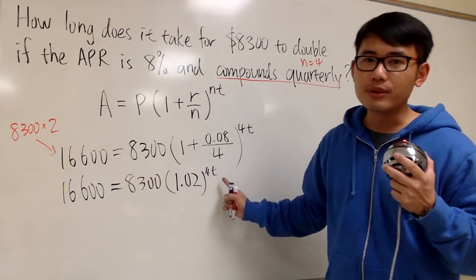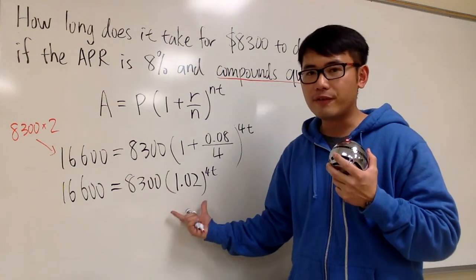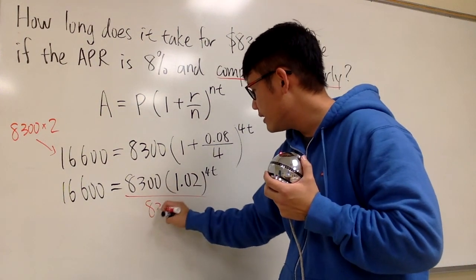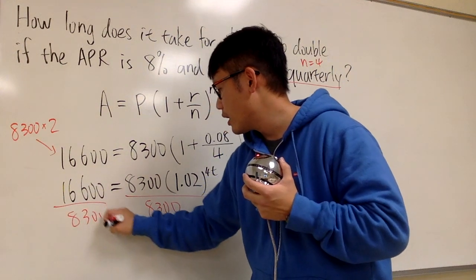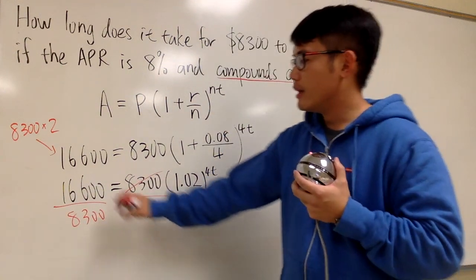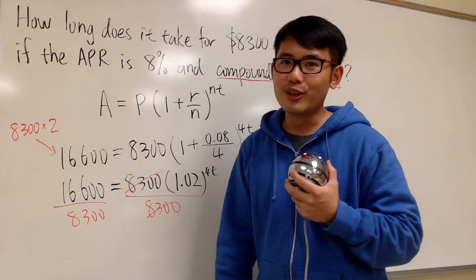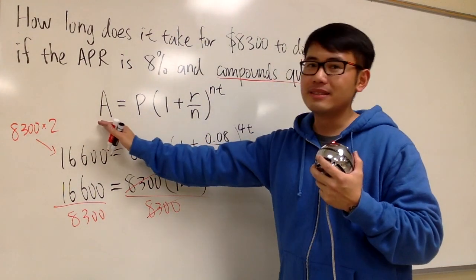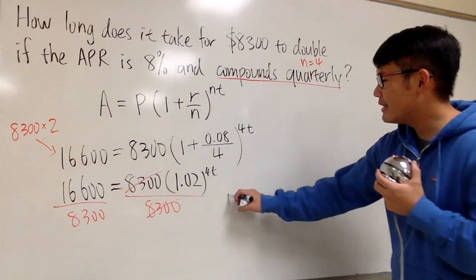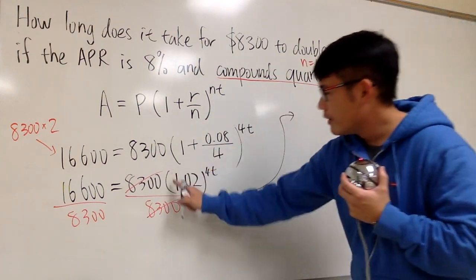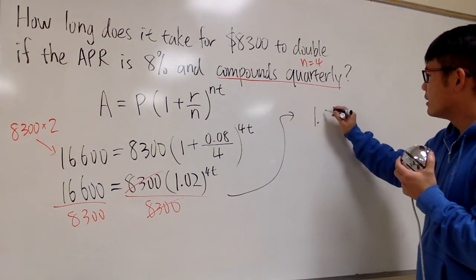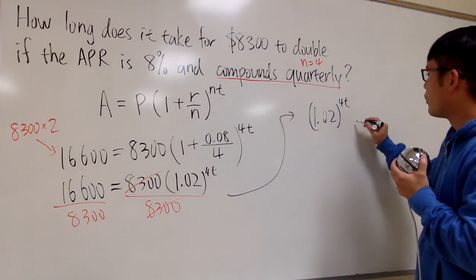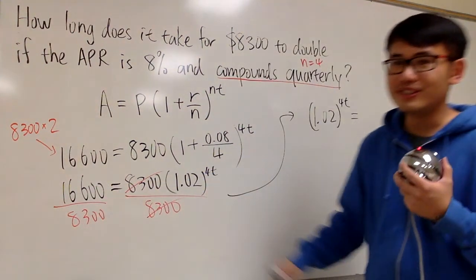Notice that the t is in the exponent. We have to isolate this part first. I need to get rid of this, so let me divide both sides by 8,300. And they will cancel. This divided by that, it's going to be 2. And you know it's 2 because it's doubling the amount. The amount is doubling the principal. Let me write this down on the left-hand side: 1.02 raised to the 4t power. This is equal to this right here, which is just 2.